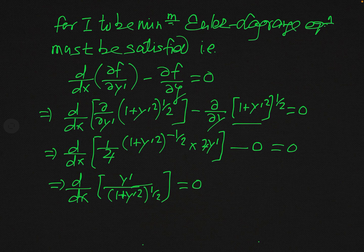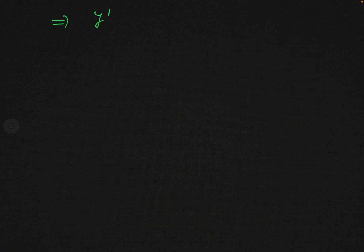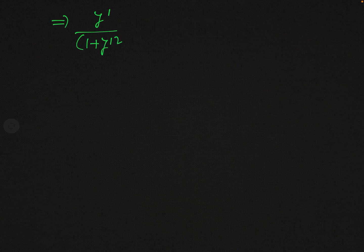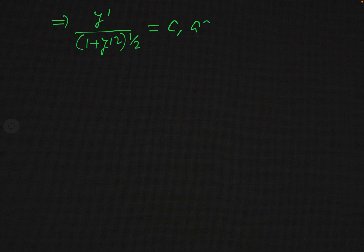The 2's cancel and we get d/dx [y' / √(1 + y'²)] = 0. Since the derivative of this function is 0, the function itself must equal a constant. Therefore: y' / √(1 + y'²) = c, where c is a constant.